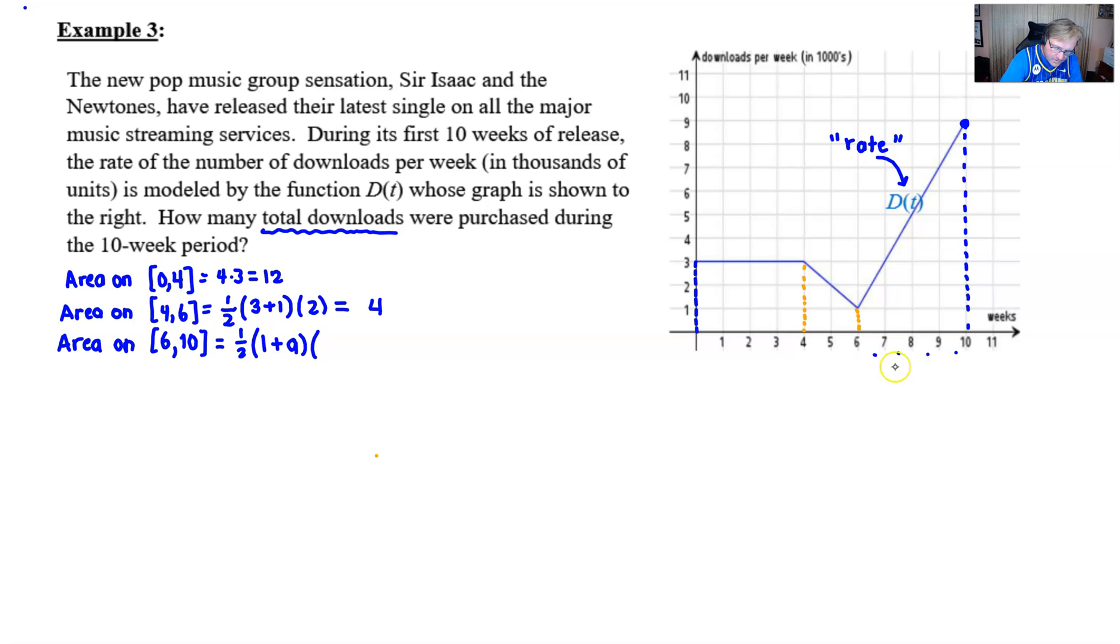And then the height of that particular trapezoid, one, two, three, four, is four units there along the side, basically ten minus six. Now we have one half of ten times four, one half of forty, which is twenty.